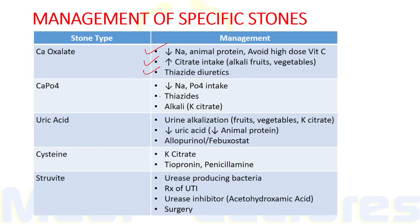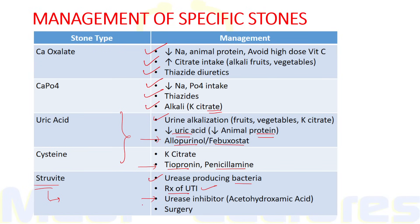For calcium phosphate stones: diet low in sodium and phosphate, thiazides, and alkali like potassium citrate. Since uric acid and cystine stones develop in acidic pH, we give urine alkalizers like potassium citrate. For uric acid, decrease animal protein intake and use drugs like allopurinol or febuxostat. For cystine, two specific drugs are tiopronin and penicillamine. Struvite stones develop from infection, especially by urease-producing bacteria like Klebsiella, so we treat the UTI; specific urease inhibitor includes acetohydroxamic acid, and surgery is sometimes required.